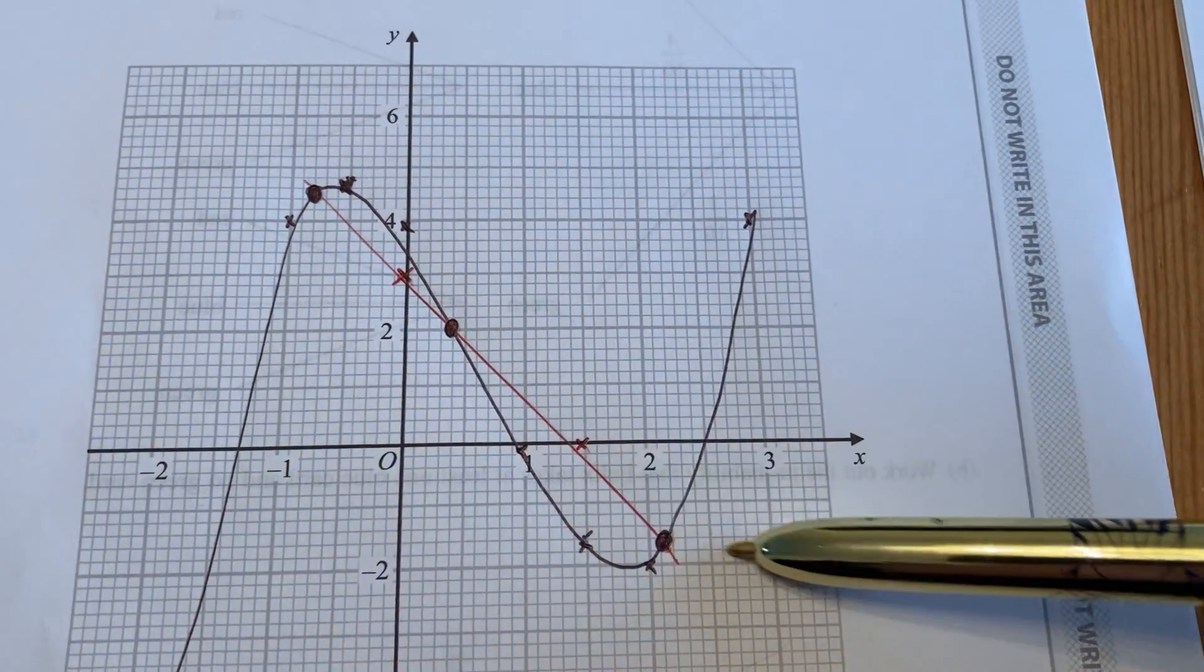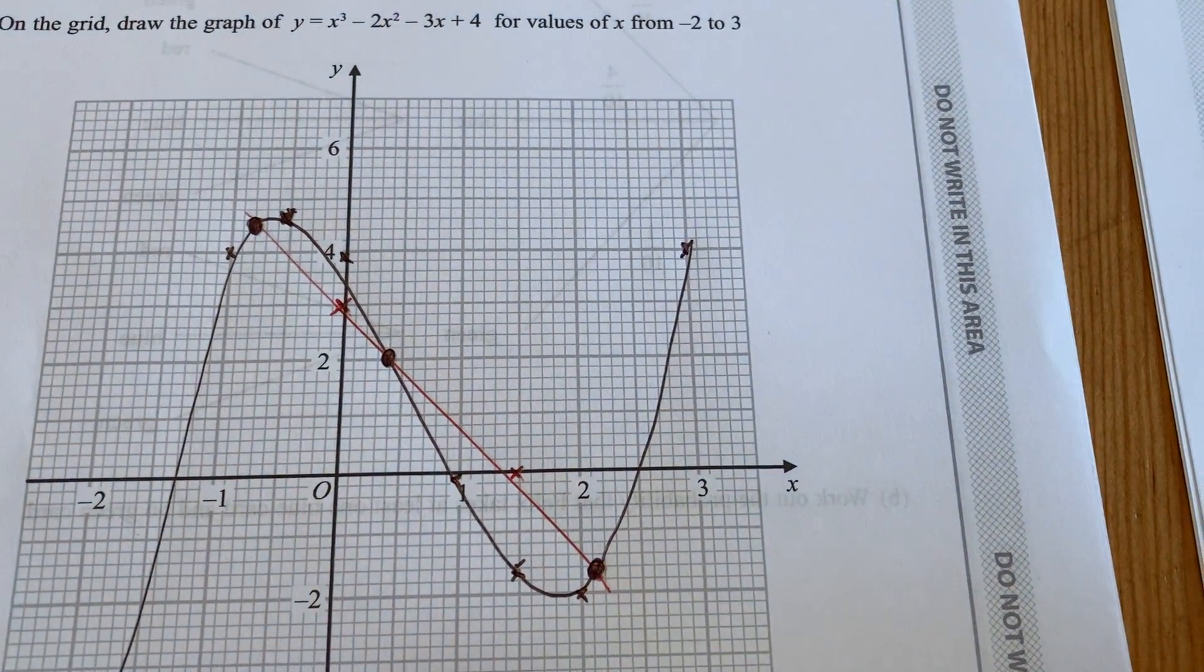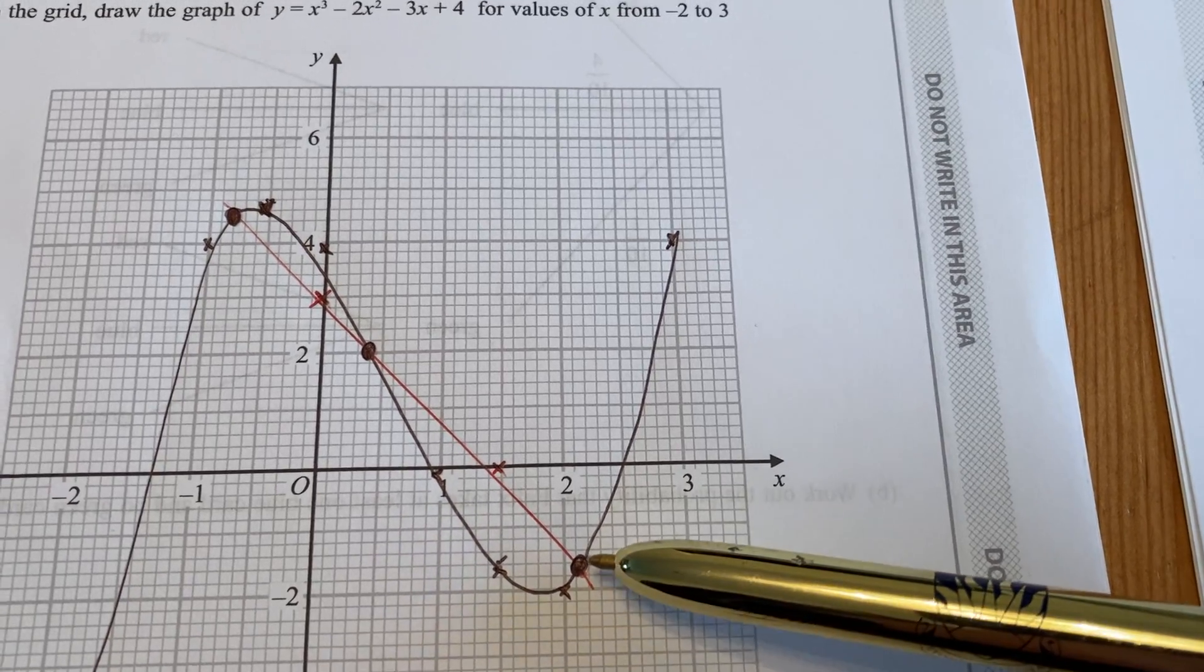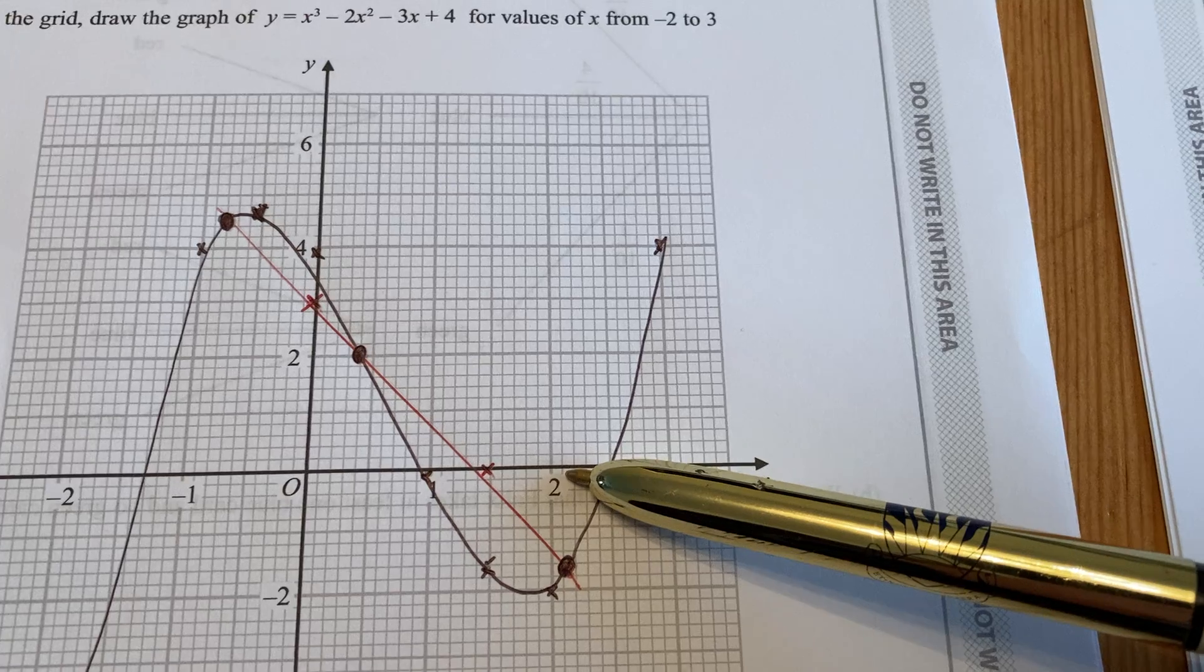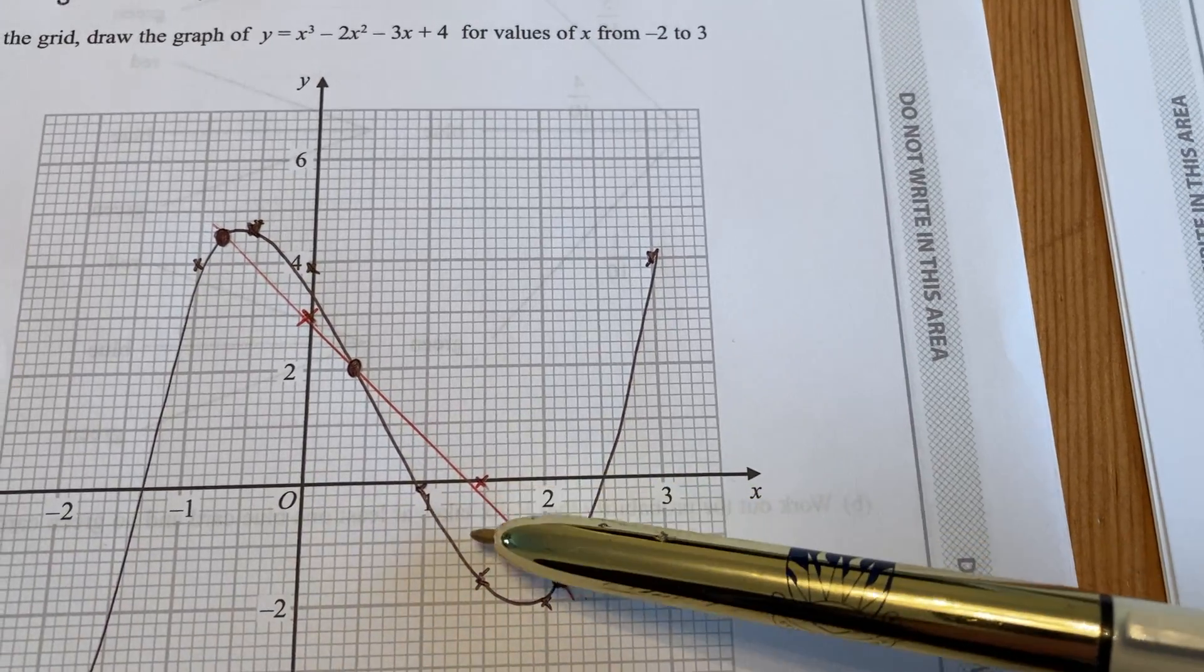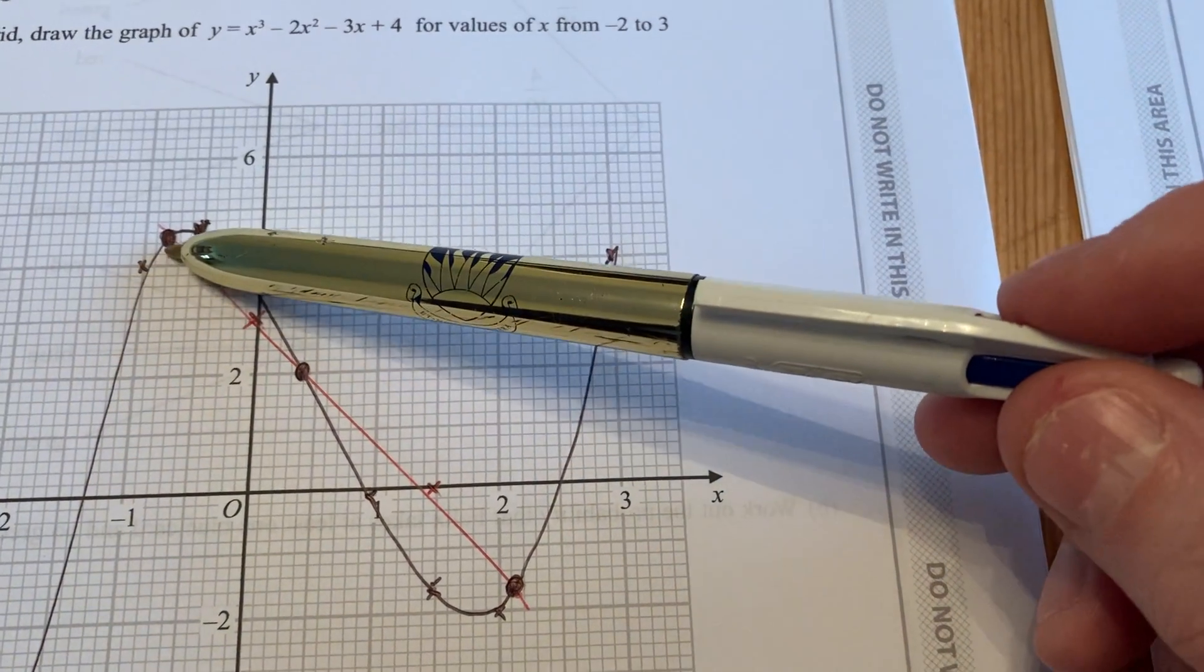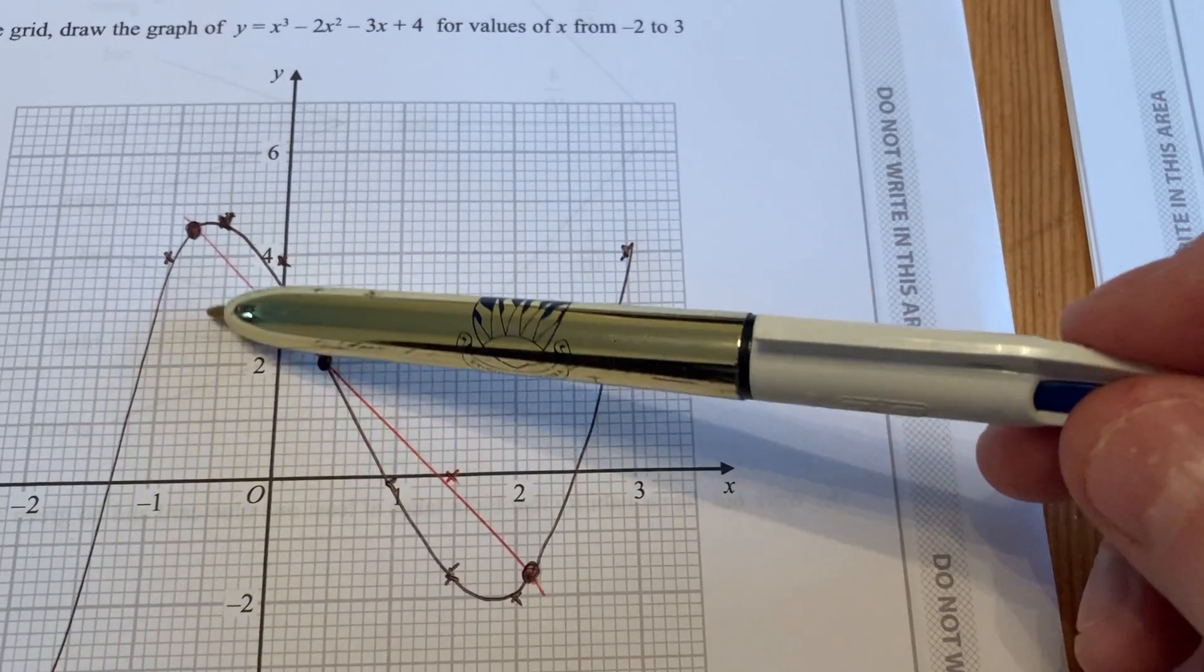I've extended the red line, and what we want is where those intersection points are between the red line and the black line. They cross here when x is 2.1, they cross here when x is 0.4, and they cross here when x is -0.8. So three answers.